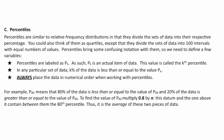Percentiles are very similar to quartiles, except they divide sets of data into a percentage. They divide data sets into 100 intervals with equal numbers of values. Percentiles have confusing notation. Percentiles are always labeled as P sub K, where P sub K is an actual item of data called the Kth percentile. So P90 would be the 90th percentile. In any particular set of data, K percent of the data is less than or equal to the value of PK. We always need to place data in numerical order when working with percentiles.